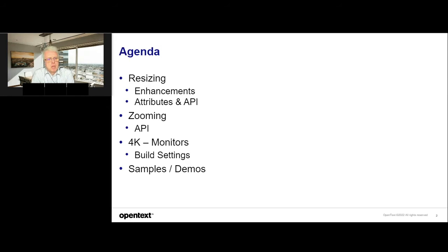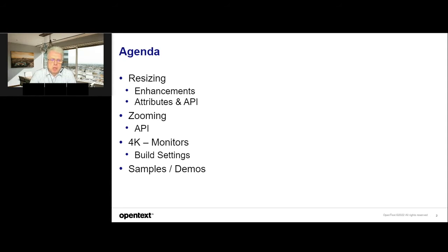I've collected all these API functions and attributes into one application, so we can use it to explain what can be done inside your application — how you can code different things to make it more responsive for users, for example to allow end users to resize, show more information, play around with different settings, zooming, and so on. You can use this application to get ideas on how to implement these features inside your existing application without changing many things.